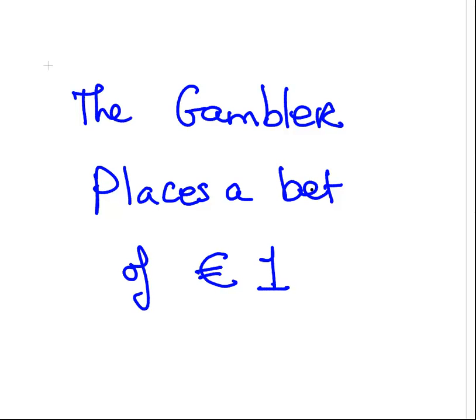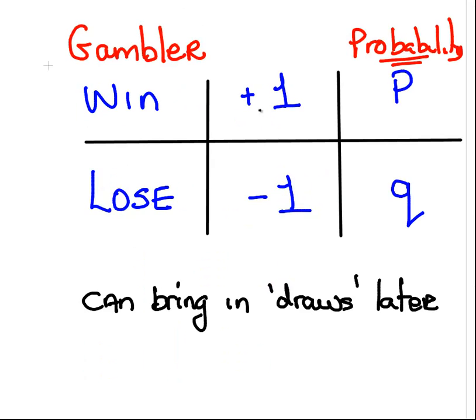Essentially the gambler places a bet of one unit and will win or lose. If he wins, plus one, he gets another unit of wealth, and the probability of that is P. So if he has 20 euro and he wins, he's at 21. If he loses, he goes from 20 to 19, and so on.